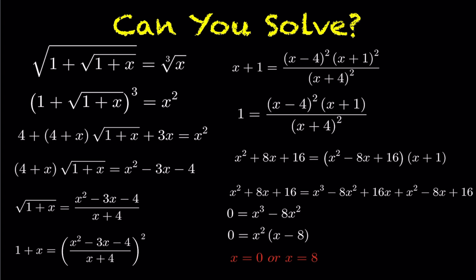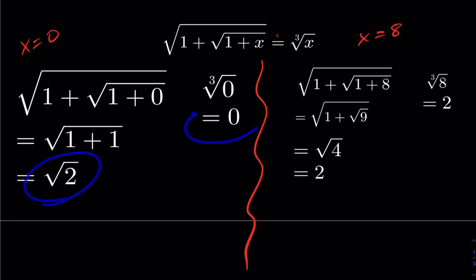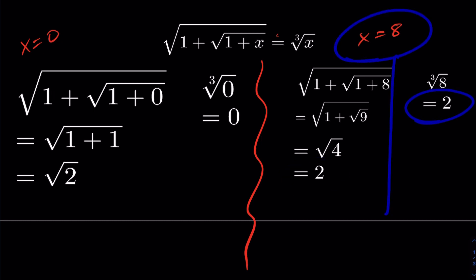Because we squared both sides of the equation, we have to check for extraneous roots by substituting both solutions into the original equation. Checking x equals zero: the left hand side gives the root of two and the right hand side gives zero, so x equals zero is not a solution. Checking x equals eight: the left hand side gives two and the right hand side gives two as well, so the solution is x equals eight.